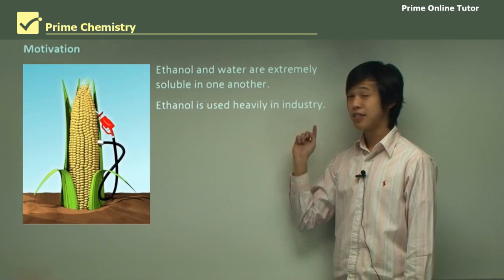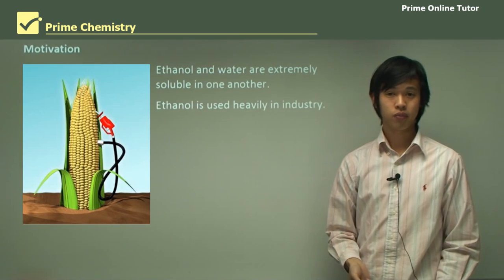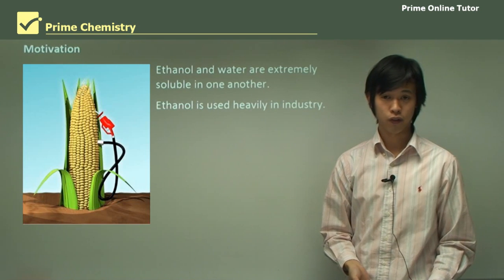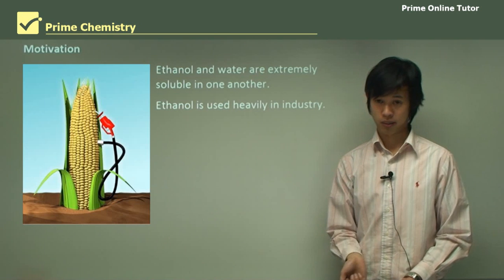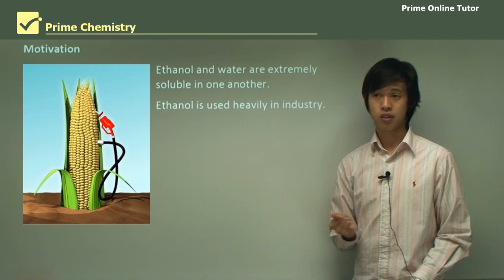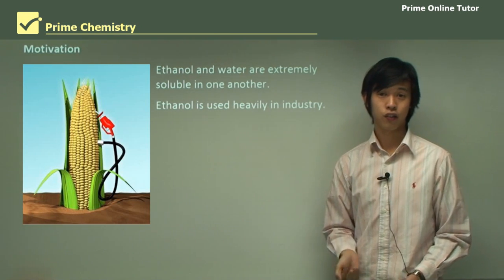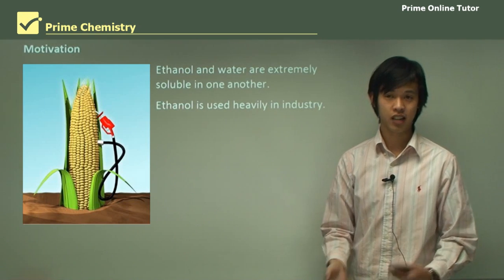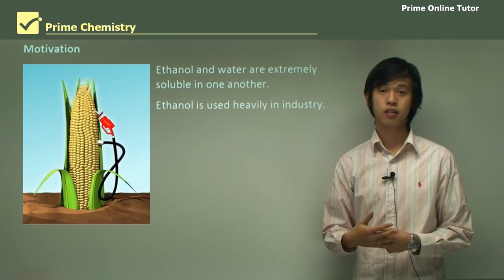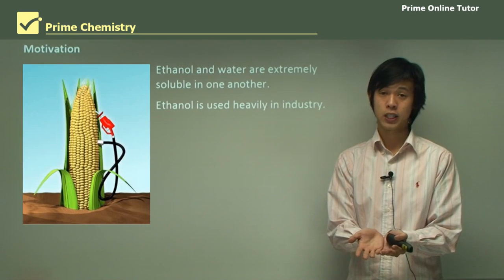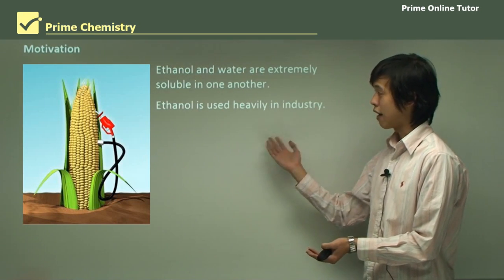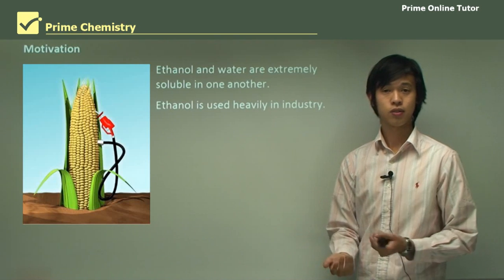Now ethanol is heavily used in industry. It's used as a solvent, sometimes in the perfume industry. It's also used as a fuel. E10 has 10% ethanol in it. It's also used in the production of ethylene or ethene, which is then used for plastic. So it's used in a whole broad range of different applications. So having pure ethanol is useful for the industry.